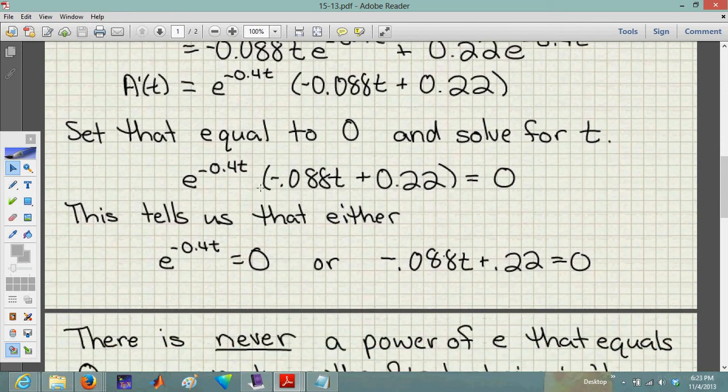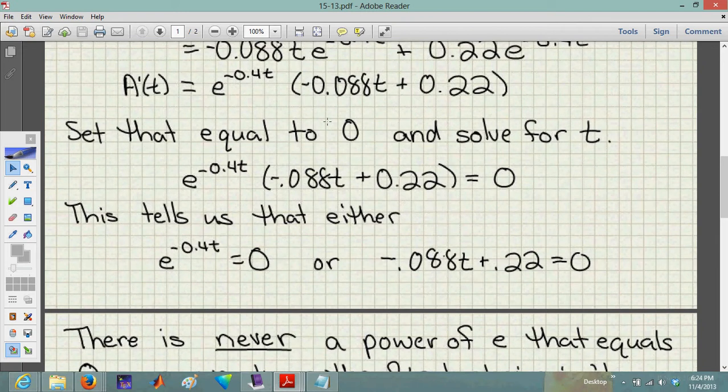So we're going to set that equal to 0. And it was important that I did this. It was important that I simplified at this point because when we set it equal to 0, we're going to see that we have e to the negative 0.4t times that equals 0. So that means either e to the negative 0.4t equals 0, or what's inside the parentheses equals 0.